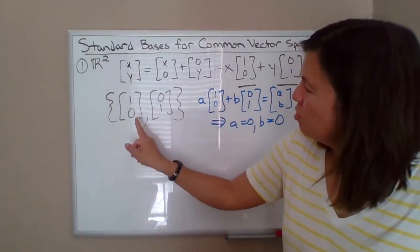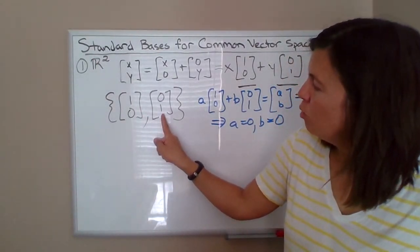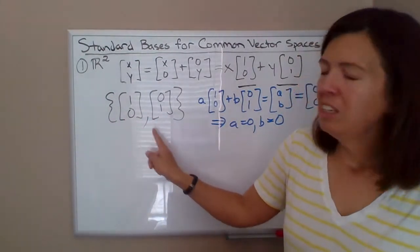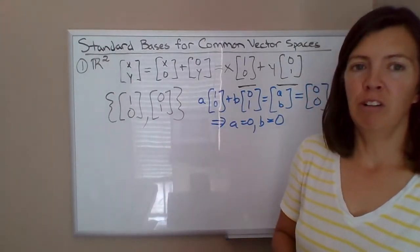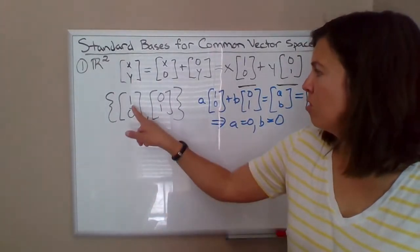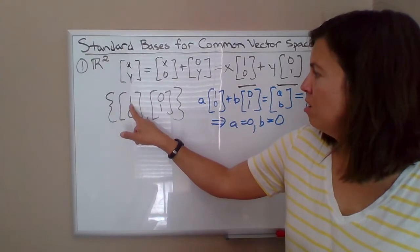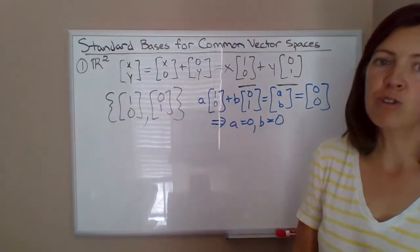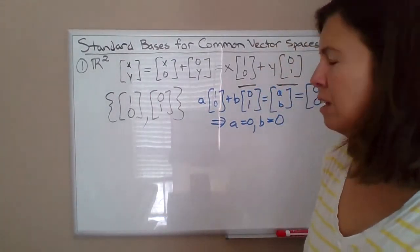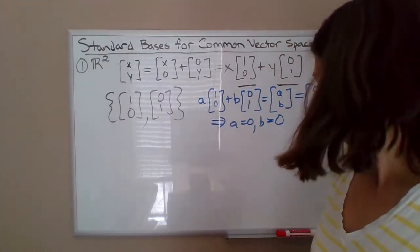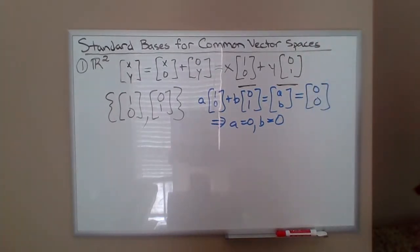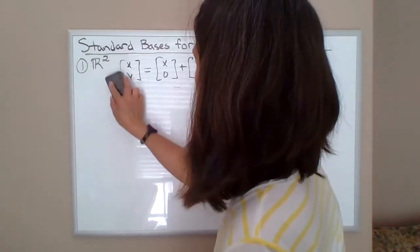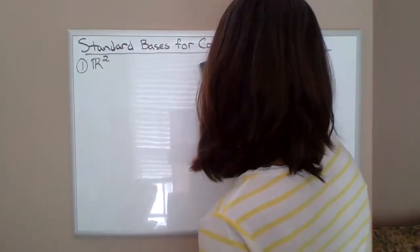Whenever you have vectors in this form where I've got a non-zero entry in the second position and every other vector in the set has a 0 in that position, then they're going to be linearly independent. So whenever you've got non-zero in this position, everything else is 0 there. And then non-zero here, everything else is 0 there. If that's true for every entry, then they'll automatically be linearly independent. So that's R².